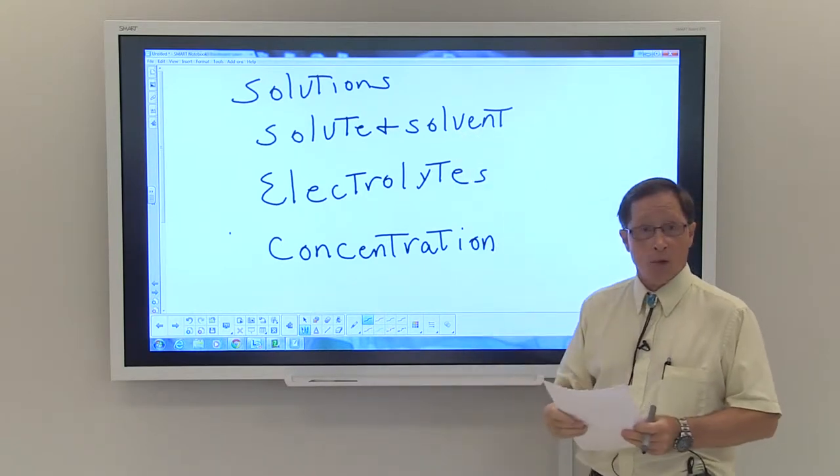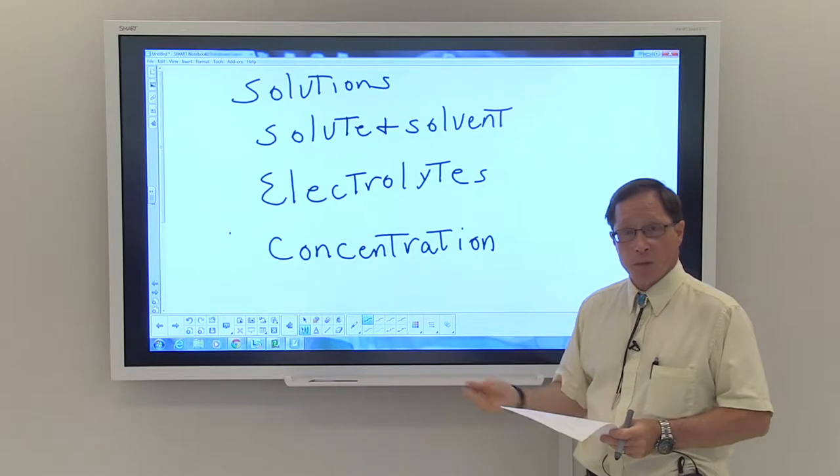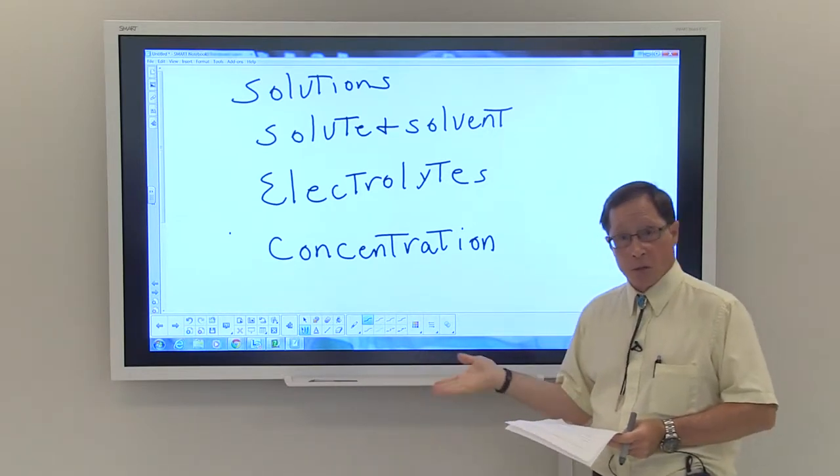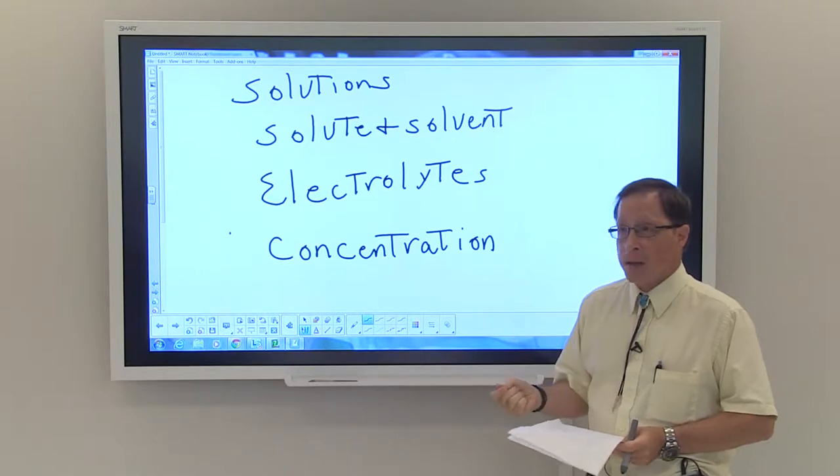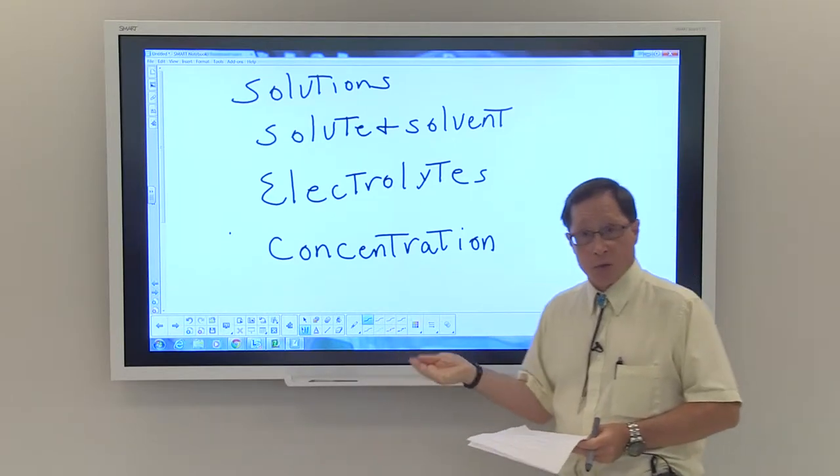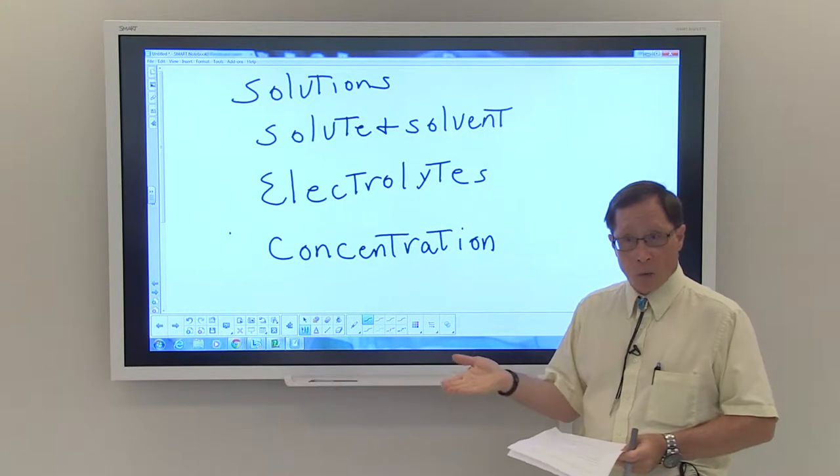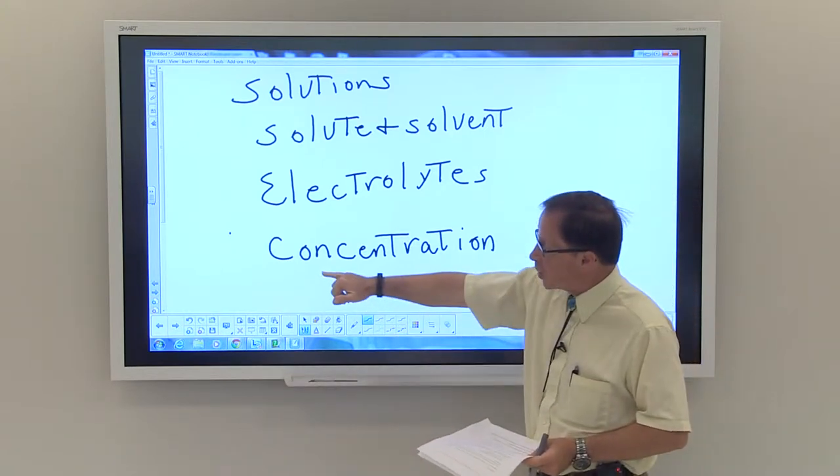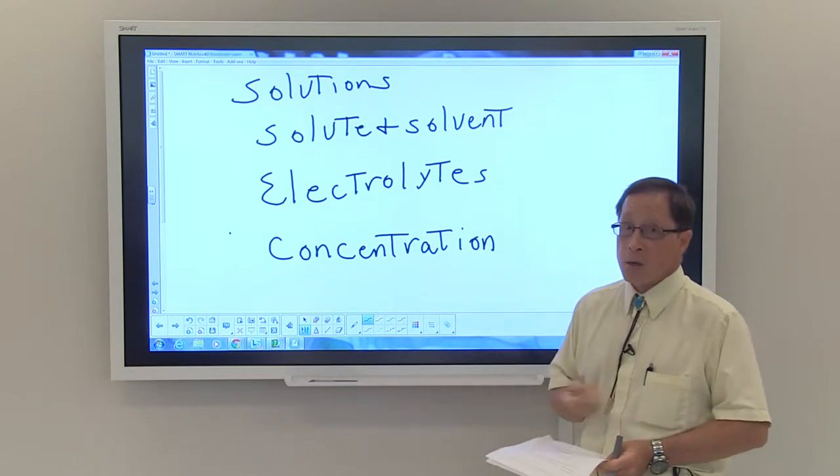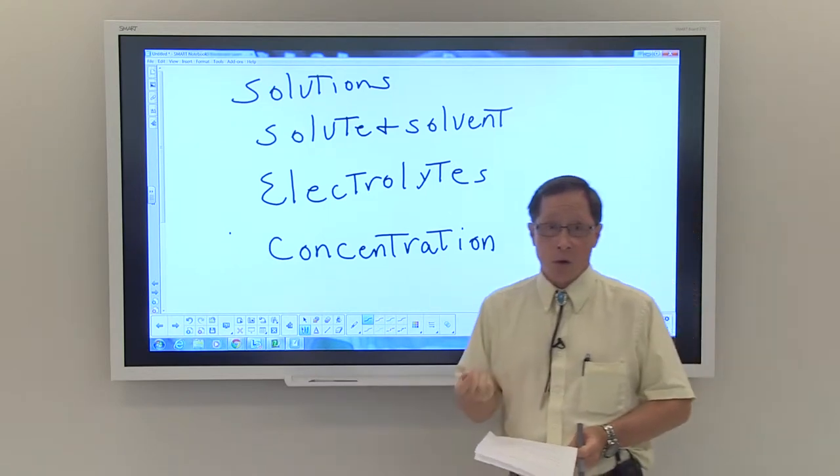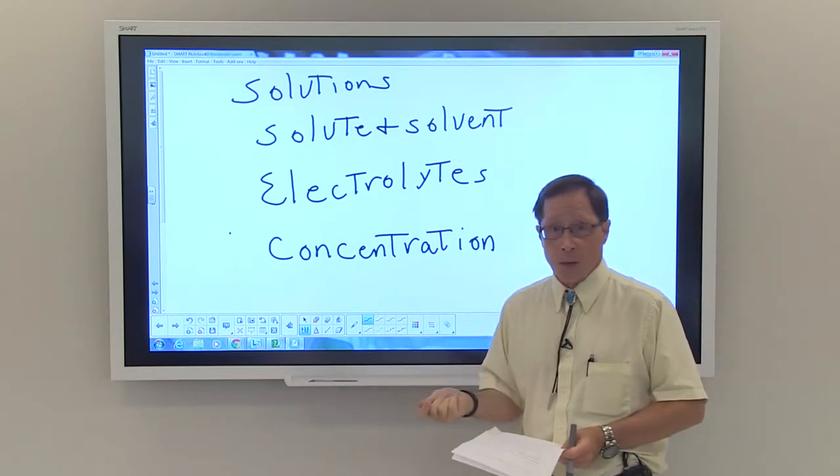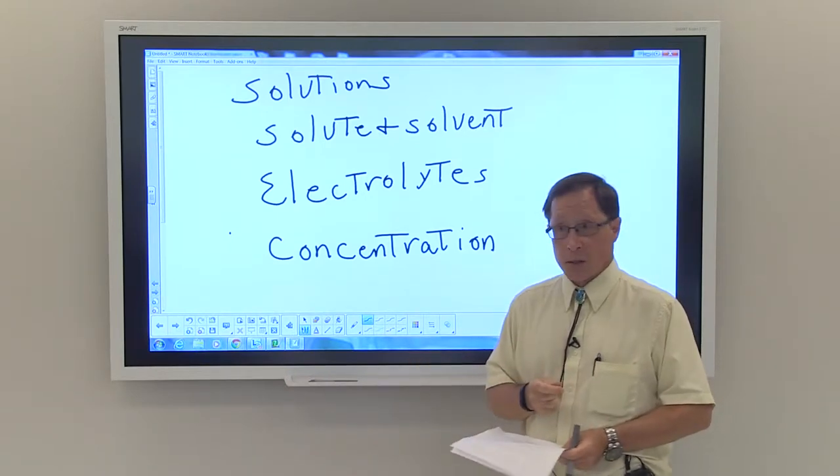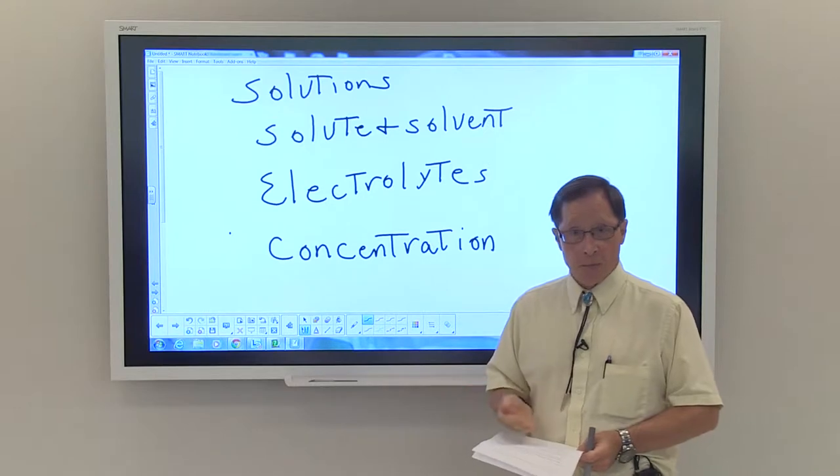When we have a solution, we typically will have a solute and a solvent. There can be more than one solute in a solution. The solvent is defined as that which is present in greater quantity. It dissolves solutes. Solutes are dissolved, they're present in lesser quantity. Concentration is the amount of solute that's in a given amount of solvent. It can also be expressed as the amount of solute that's in a given amount of solution.